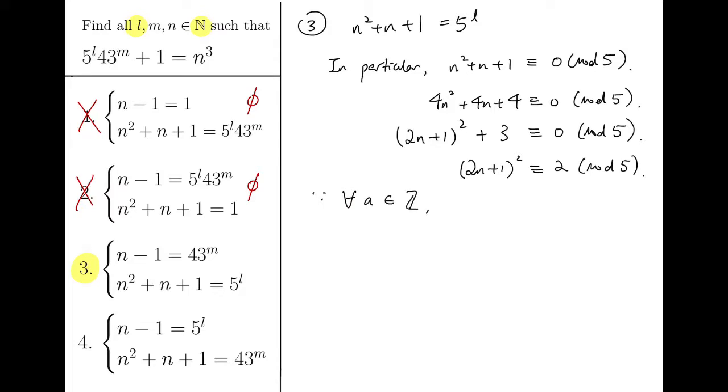However, notice that for all integers A, square numbers must only be 0, 1, or 4 mod 5. In fact, you can check this yourself.